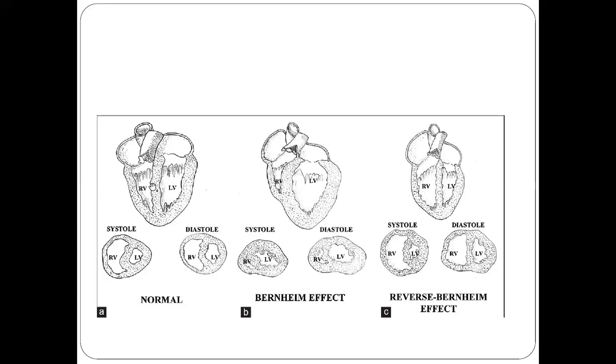Whenever the ventricular septum bulges towards the right ventricle due to increased pressure in the LV, it bulges into the right ventricle and increases the right ventricular pressure. This is what is called the Bernheim effect.